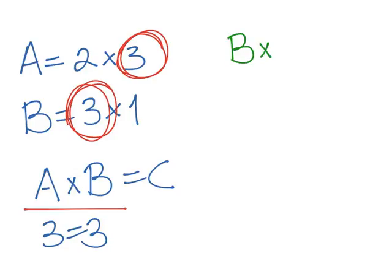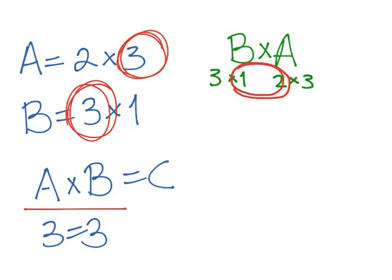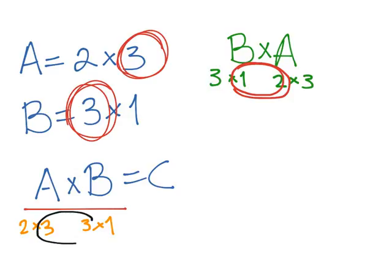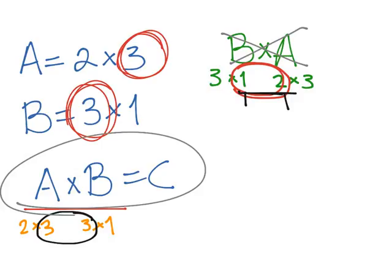However, if we try to multiply B times A, we have a matrix of size 3 times 1 followed by a matrix of size 2 times 3. Writing it out, these two adjacent numbers must be equal — here the number of columns of B is 1 and the number of rows of A is 2, and they are not equal. So you cannot multiply B times A, but you can multiply A times B to get a valid matrix.